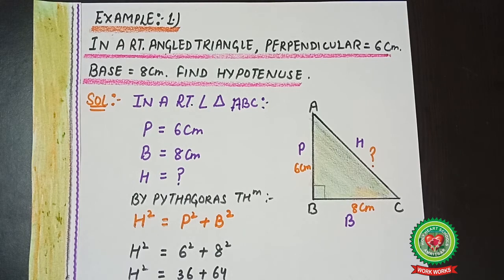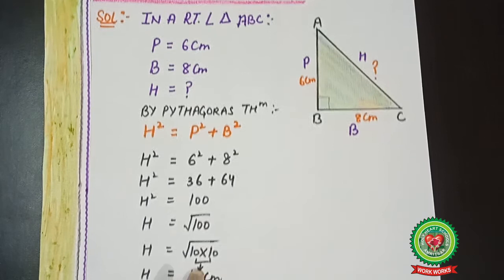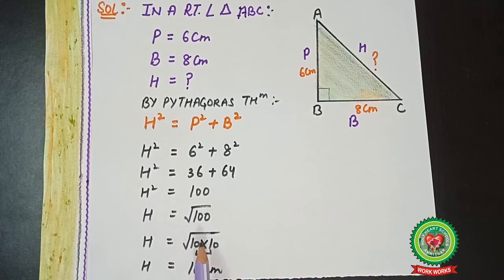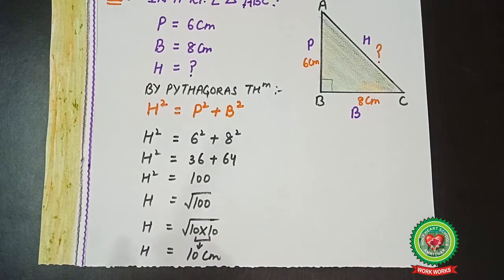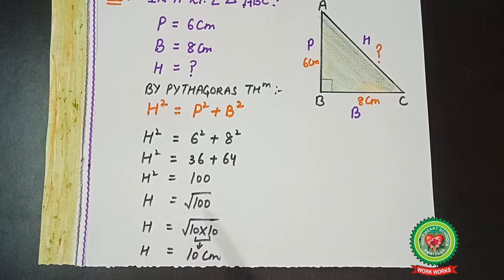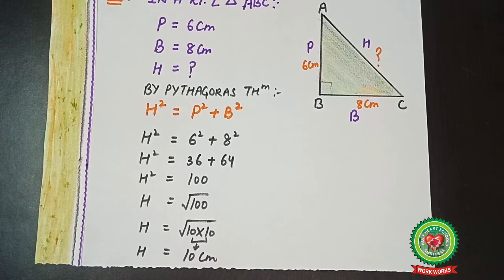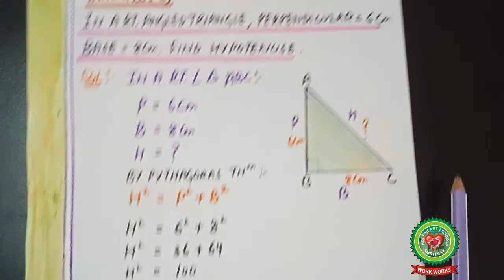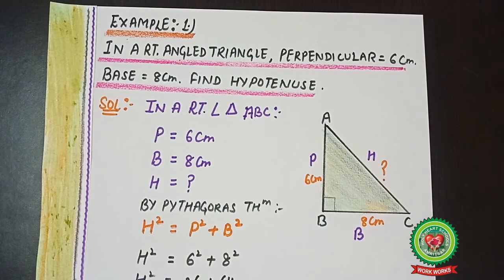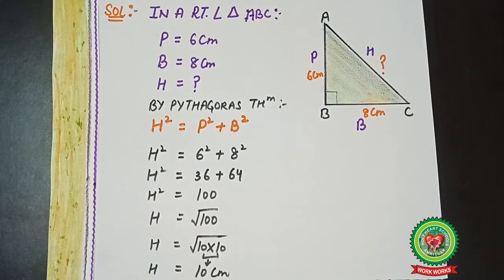You have already learned how to find perfect squares in junior classes. Here, the perfect square of 100 is 10. So you can write the answer directly: H = 10 centimeters. That is what we needed to find — the hypotenuse — and we have found its value.